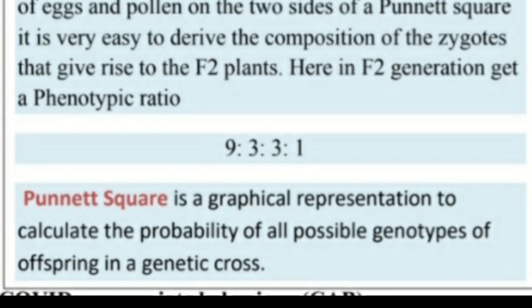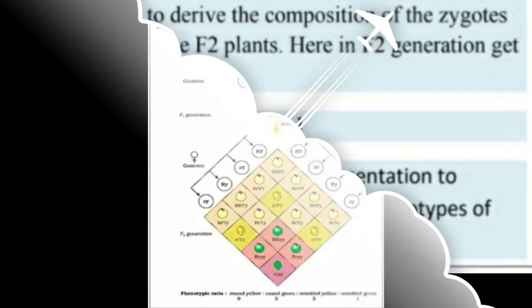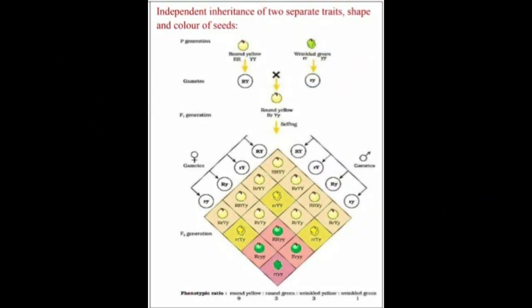The Punnett square is a graphical representation to calculate the probability of all possible genotypes of offspring in a genetic cross. Independent inheritance of two separated traits — shape and color of seeds. Mendel showed round and yellow (capital R, capital Y) as dominant, and wrinkled and green (small r, small y) as recessive. This is called the Law of Independent Assortment.